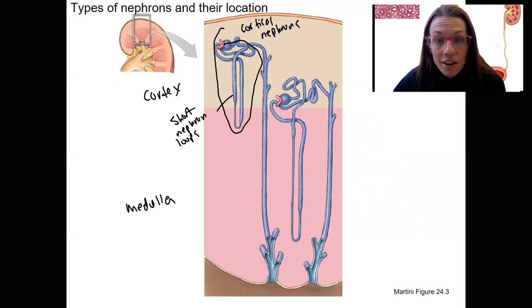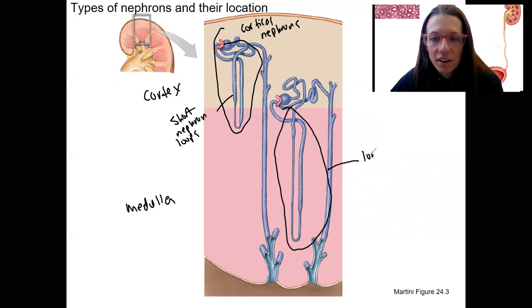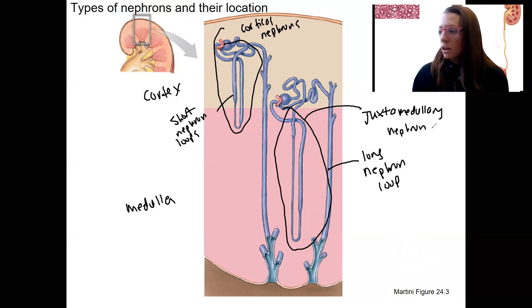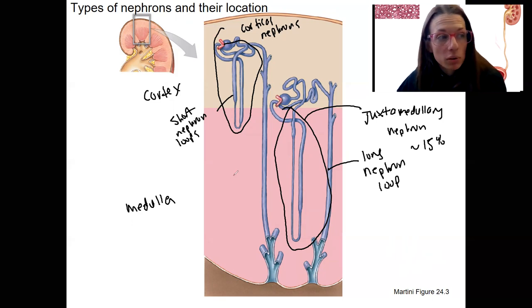Then we've got nephron loops that dip way down. This is a long nephron loop. This is going to be important for creating an osmotic gradient. So when we look at this nephron loop, we'll see the importance of this. This is called a juxtamedullary nephron. This is actually only about 15%, but they're responsible for creating an osmotic gradient in the medulla that's going to be important for blood volume and electrolyte regulation.